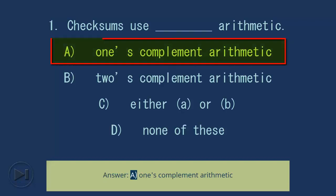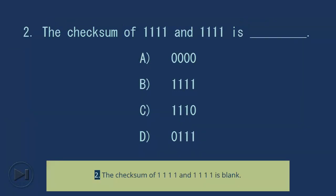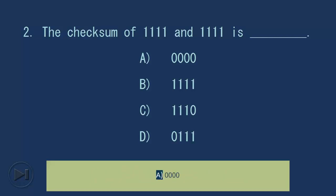Answer: A, one's complement arithmetic. Question 2: The checksum of 1111 and 1111 is blank. A) 0000, B) 1111, C) 1110, D) 0111.